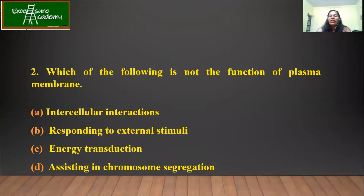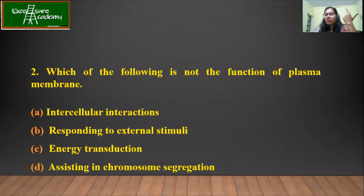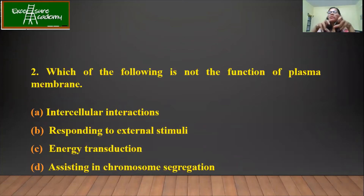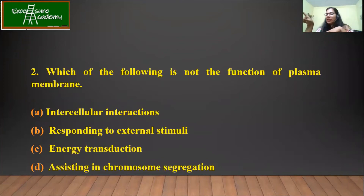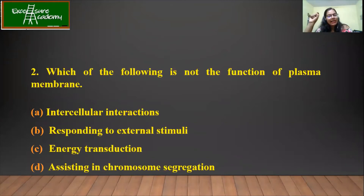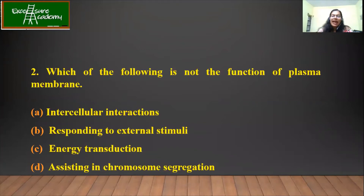Now, which of the following is not the function of the plasma membrane? In the previous class, we discussed that it is involved in intracellular interactions. It also responds to external stimuli because it has receptors with a carbohydrate moiety that acts as an antigen. These receptors get signals from the outside environment and carry out cell signaling. Energy transduction is also correct. The only function listed that is not a function of the plasma membrane is assisting in chromosome segregation. Hence the answer is D.